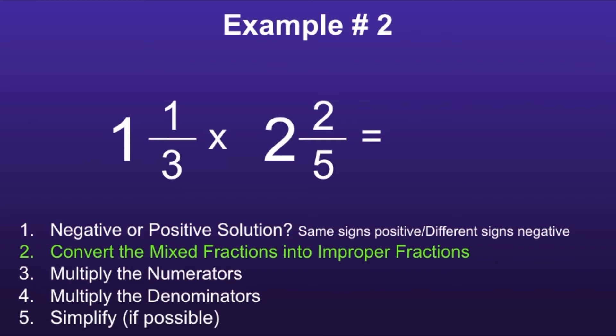This moves us on to step number two: convert the mixed fractions into improper fractions. We can do this by multiplying the whole number by the denominator. One times three is three, and then adding the numerator. So three plus one is equal to four. We can convert one and one-third into four-thirds. Moving on to the second fraction, we first want to multiply two by five, and two times five is equal to ten. Then we want to add the numerator, which is two. So ten plus two is equal to twelve. We can convert two and two-fifths into twelve-fifths.